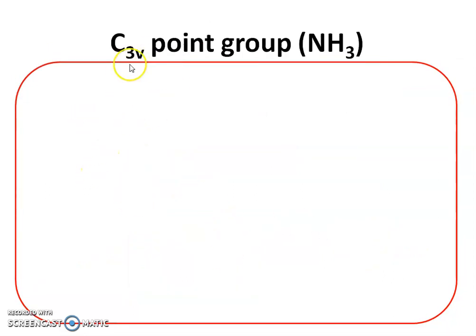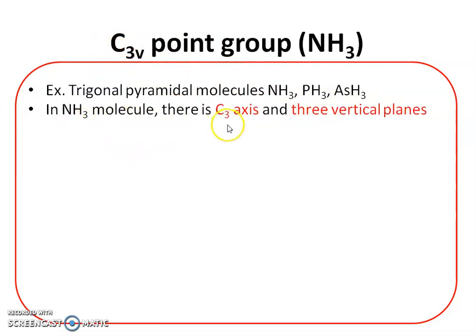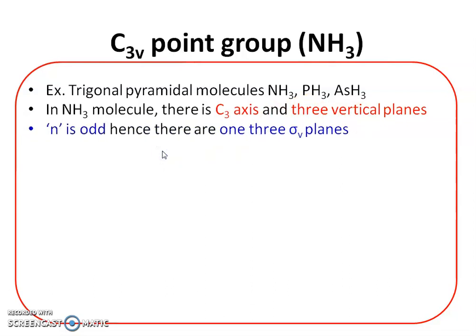The next example of the CNV point group is C3V — not only in ammonia but in trigonal pyramidal molecules like ammonia, phosphine, and arsenic hydride. In ammonia there is a C3 principal axis and three vertical planes. Since N is odd, all planes are of the same kind — sigma V — and there is no sigma V prime plane.